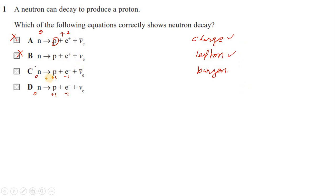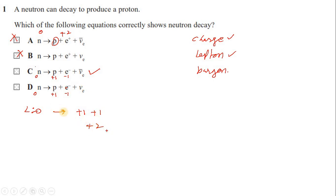Now check lepton number for option C: lepton number before is zero (no leptons). After, we have an electron (lepton number +1) and an anti-neutrino (lepton number −1), so +1 − 1 = 0 — lepton number is conserved. For option D, lepton number after is +1 (from electron neutrino) plus −1 gives... wait, it totals +2, so lepton number is not conserved. Only option C satisfies both charge and lepton number conservation.